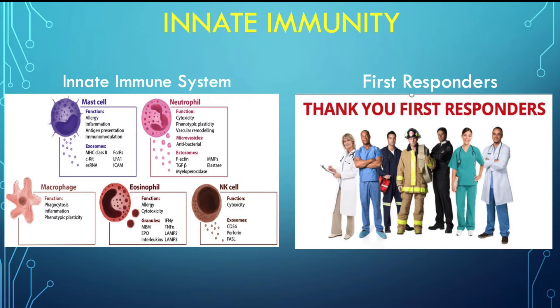The innate immune system acts as first responders that recognize a foreign invader like the COVID-19 virus and attempts to destroy that invader before it can infect the host cell. Like a fireman in the fire station, the innate system remains dormant until called to action. The cells of the innate immune system circulate in the body constantly looking for potential danger. Sometimes the danger is too intense for the responders and others must be called upon to prevent further damage.